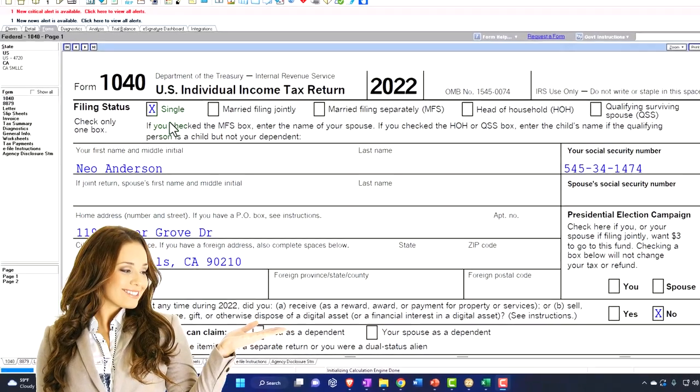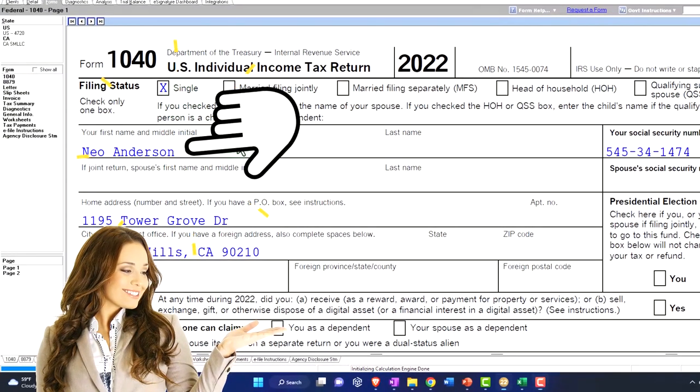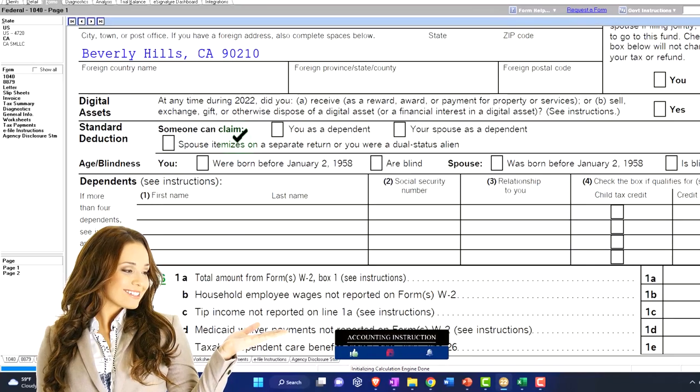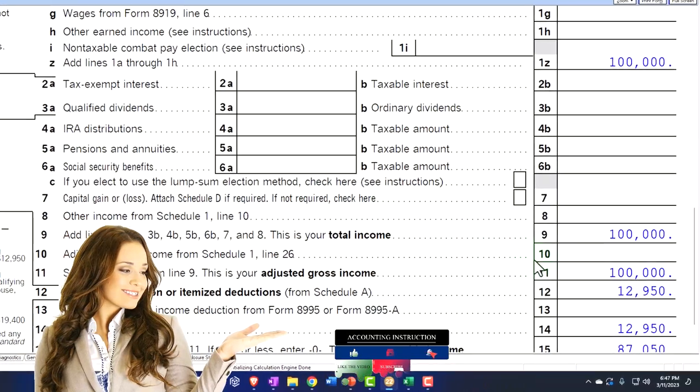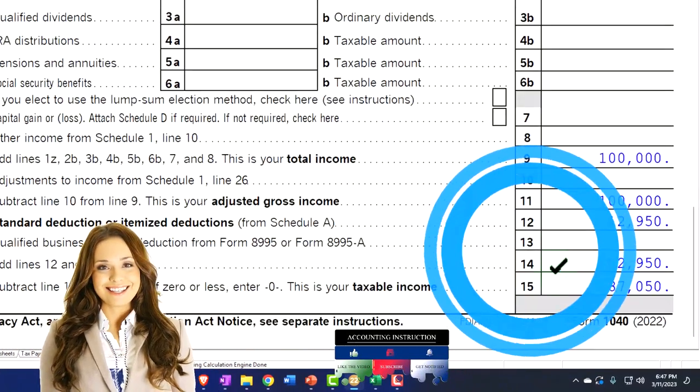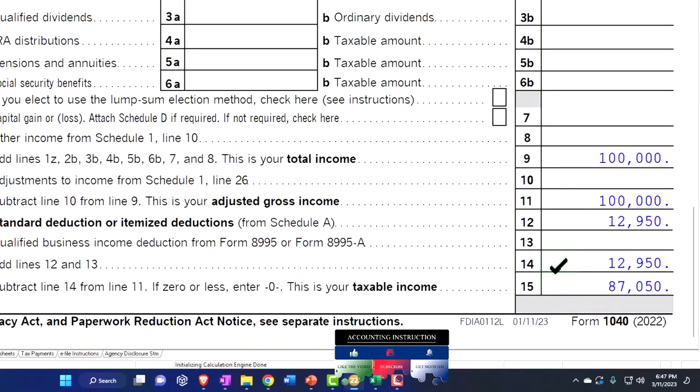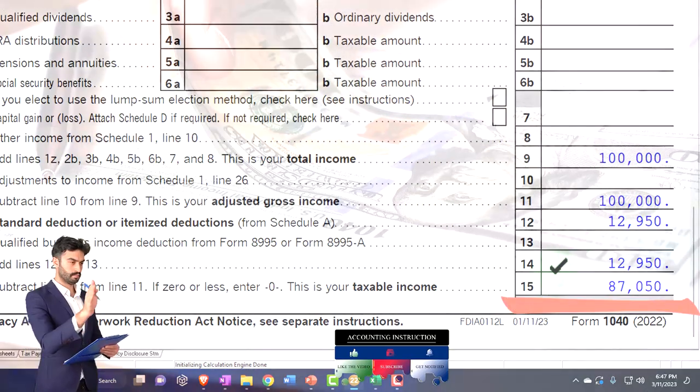Starting point as usual: single filer, we've got Mr. Anderson, no dependents, $100,000 in W-2 income. $12,950 standard deduction gets us down to the bottom line taxable income of $87,050.